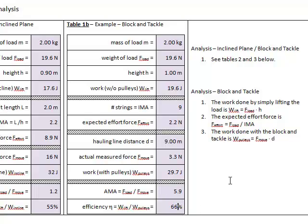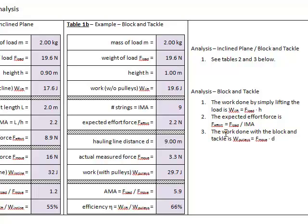The efficiency is the lifting work — 19.6 joules — divided by the pulley work of 29.7 joules, which comes out to 66%. One hundred percent would mean I used the same amount of work either way, but I don't get a free lunch, so it has to be 100% max. By using the block and tackle I have an efficiency appreciably less than 100%, which means I actually expend more work — 29.7 compared to 19.6. But I'm willing to exert more work because the force I used was appreciably less.